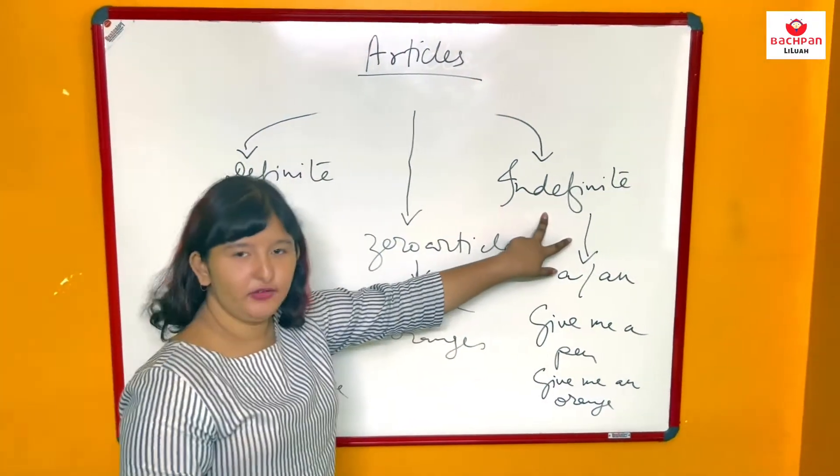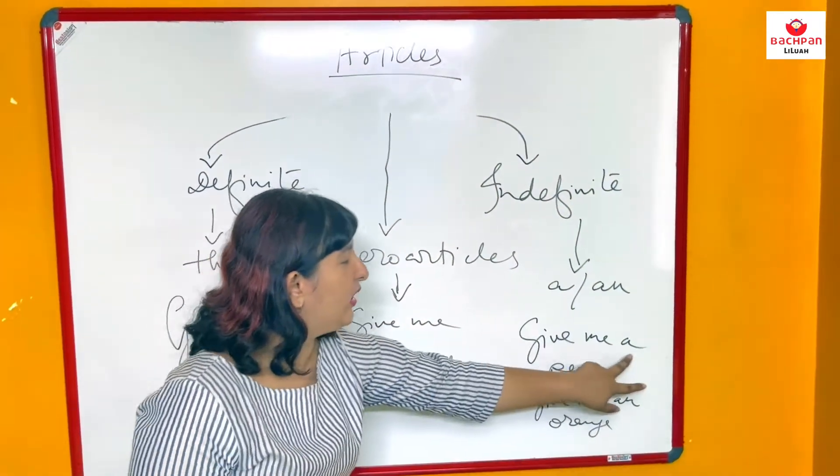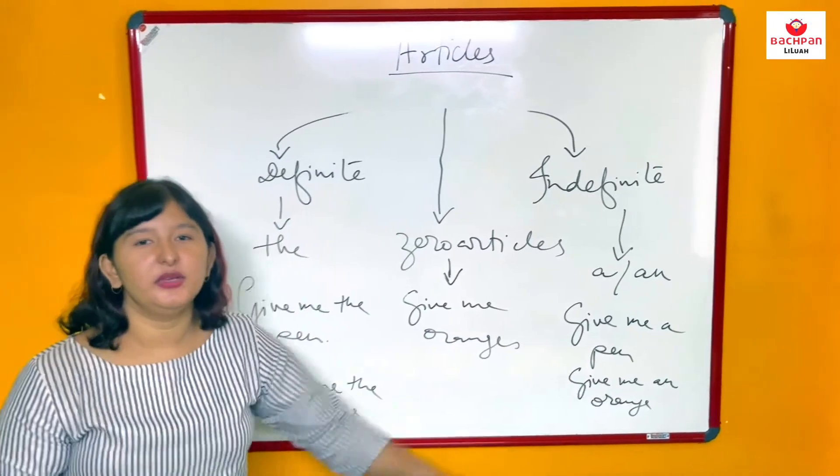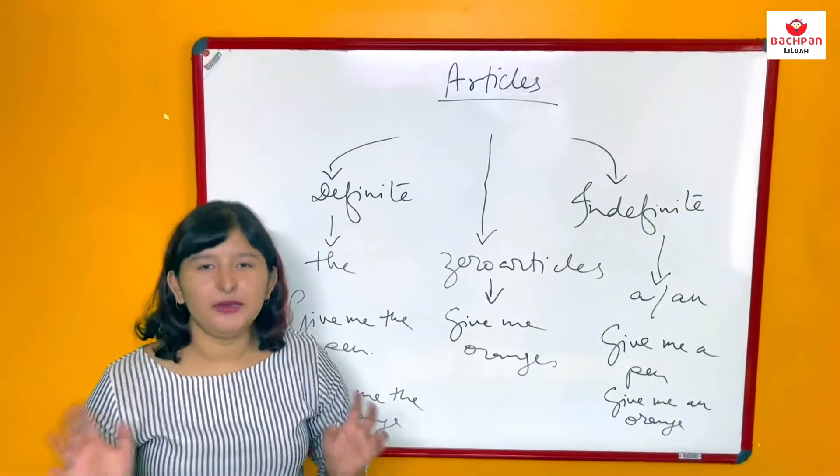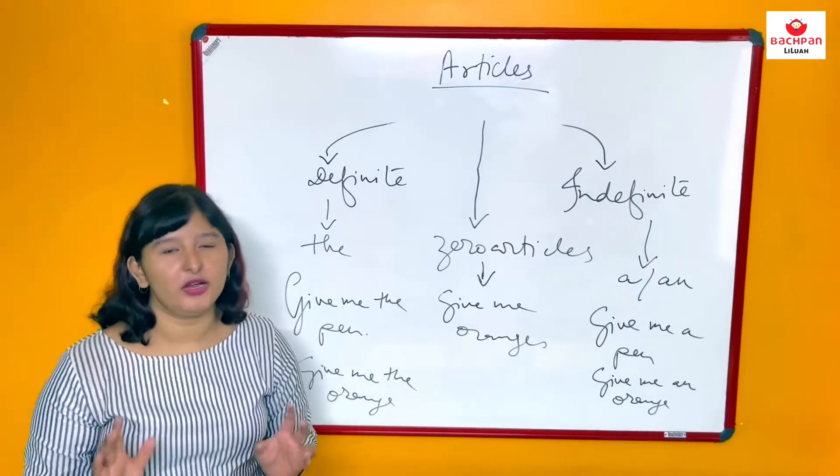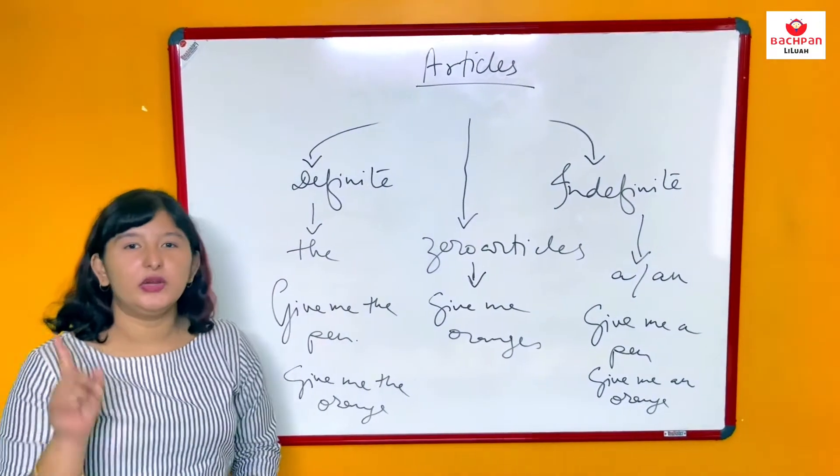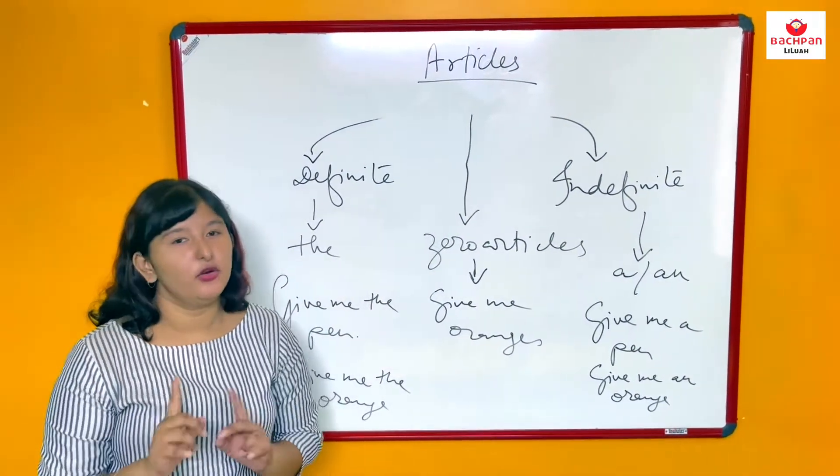Similarly in indefinite article, if I use a, like give me a pen, this means I can have any pen I want. Give me a pen means I can have any pen, any one pen would do. But give me the pen means only that particular pen and no other pen.